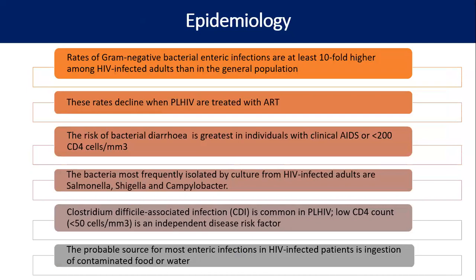Gram-negative bacterial enteric infection is 10 times more common in PLHIV than in HIV-uninfected individuals, and these rates decline with ART. Advanced HIV disease, particularly when CD4 count is less than 200 cells/mm³, sees very high incidence of these infections. The bacteria most frequently associated in PLHIV are Salmonella, Shigella, and Campylobacter. Clostridium difficile infection is common at CD4 less than 50 cells/mm³ and is an independent disease risk factor. The probable source is through the feco-oral route — contaminated food or water.